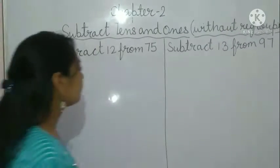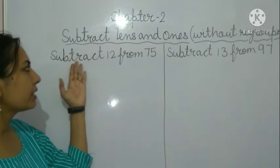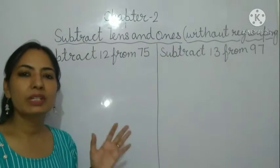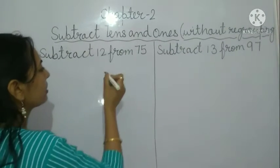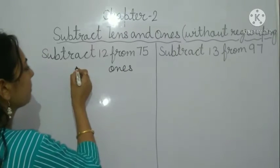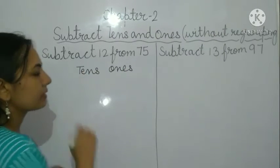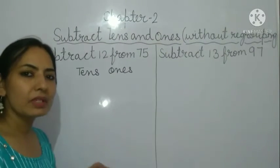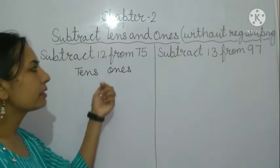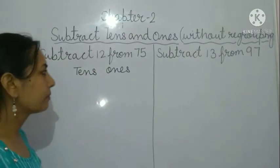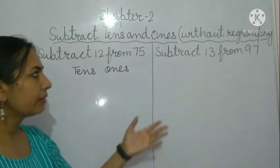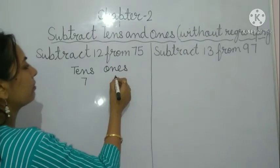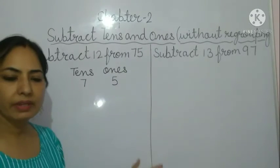Our first question is: subtract 12 from 75. As I told you, first we mention ones and tens. We write the greater number above the smaller number. 75 is the greater number, and in 75 there are seven tens and five ones, so we write seven at the tens place and five at the ones place.